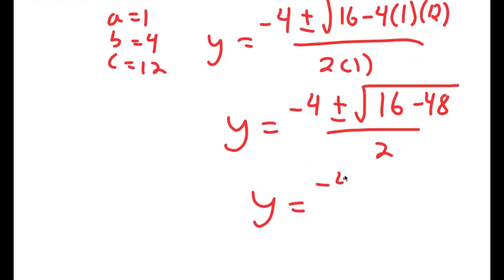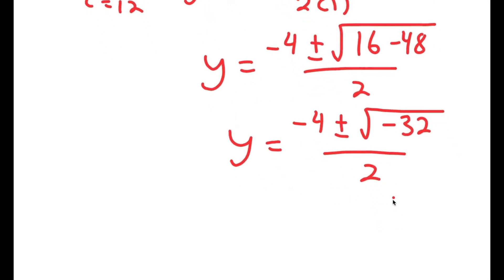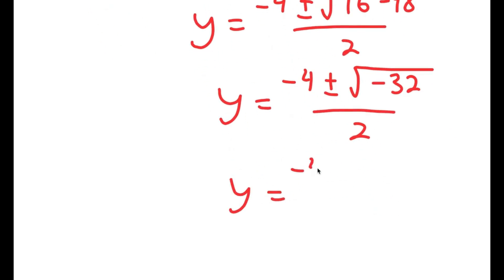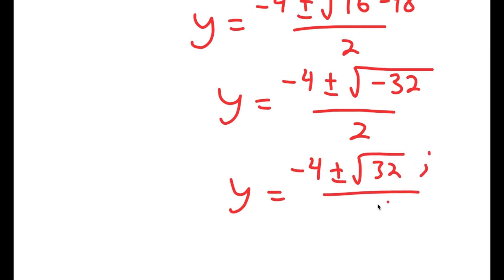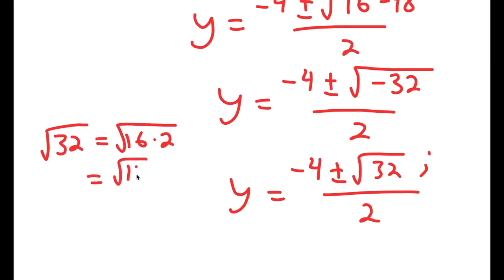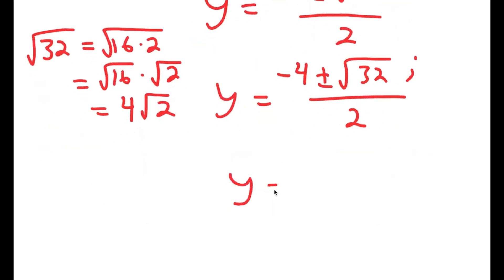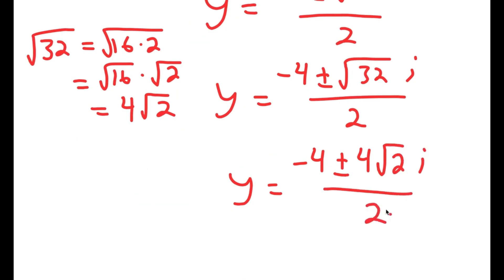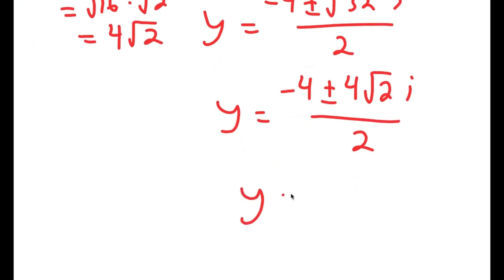This equals negative 4 plus or minus the square root of negative 32 over 2. The square root of negative 32 can be written as the square root of 32 times i. The square root of 32 simplifies to the square root of 16 times 2, which equals 4 root 2. So this gives negative 4 plus or minus 4 root 2 i over 2, and dividing both terms by 2, I get negative 2 plus or minus 2 root 2 i.